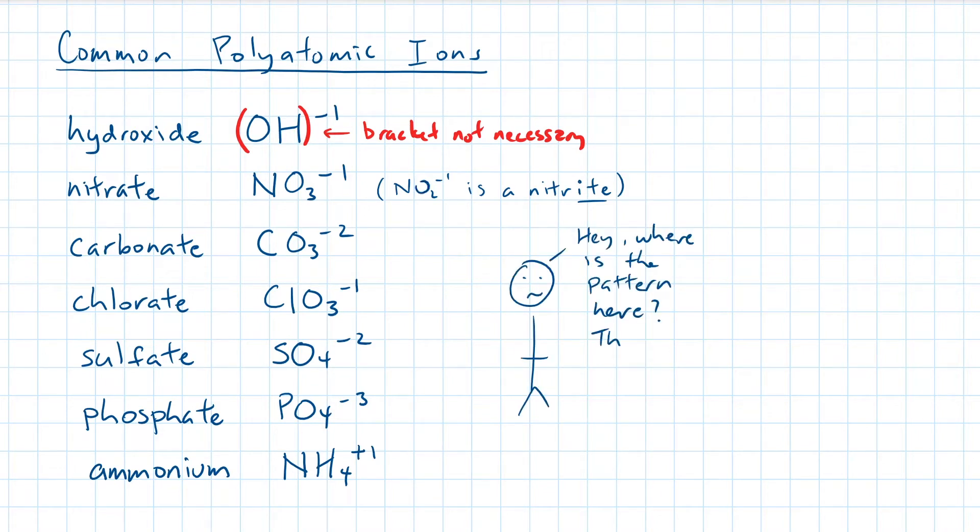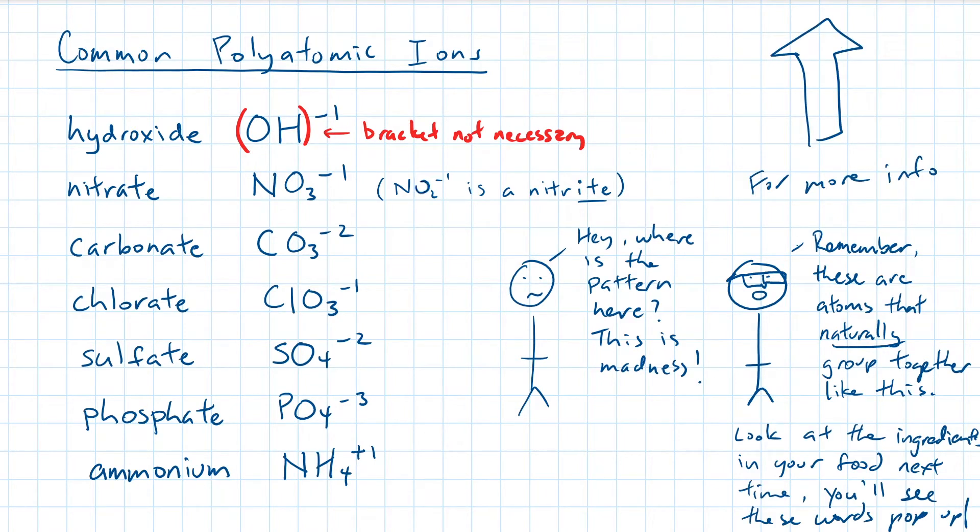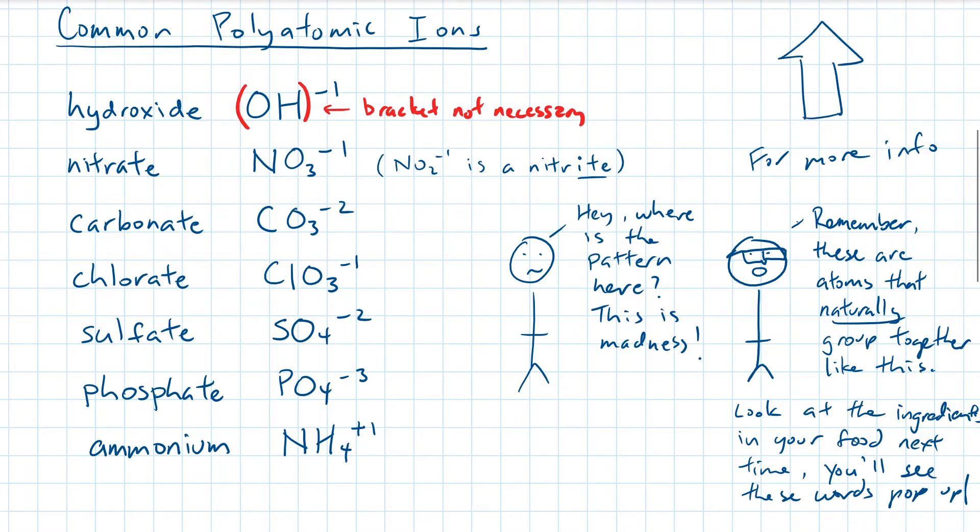I know that you're trying to find a pattern here, but unfortunately, without going into the details of how each polyatomic ion bonds, there isn't any shortcut. I'll include a link up above if you really want to know the nitty-gritty details. Luckily, someone out there came up with this memory aid to memorize six of the polyatomic ions, and it goes a little something like this.